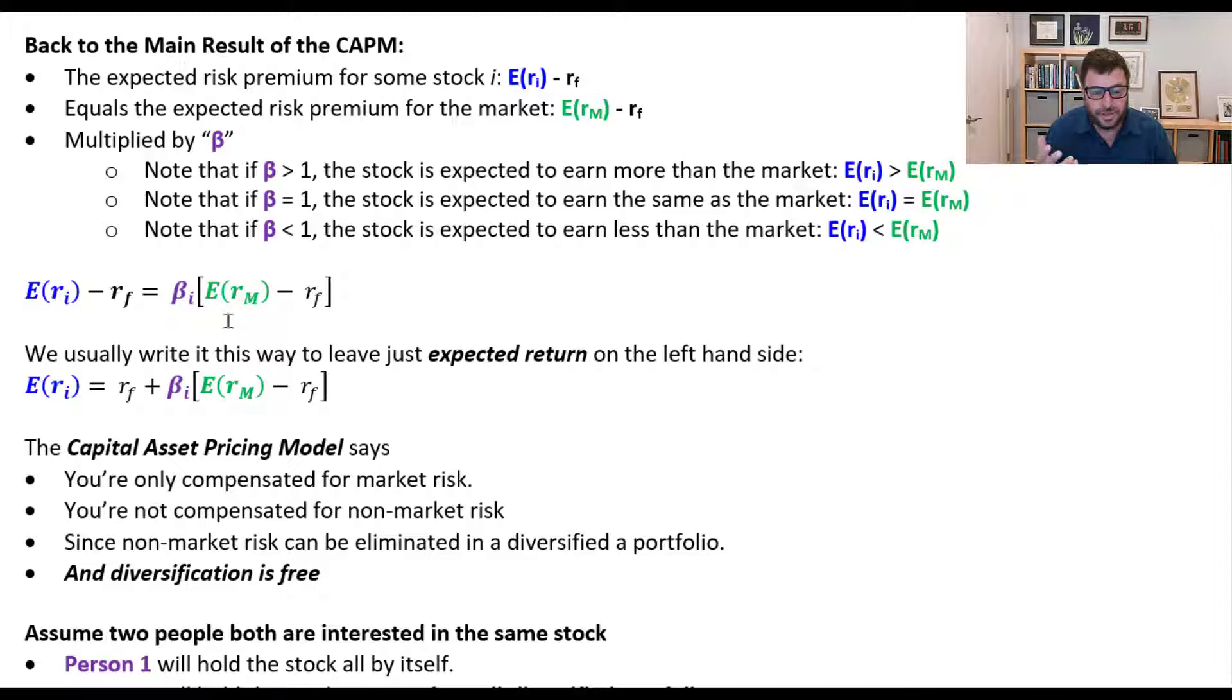And we can see this fairly simply mathematically, which means that beta is measuring essentially the portion of market risk that is held by a stock. Now note that there is no idiosyncratic component here. You do not earn the market risk premium times beta plus something for the idiosyncratic component.